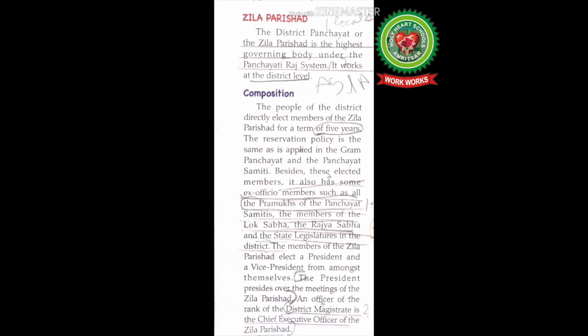Besides elected members, the Jila Parishad also has ex-officio members such as all the Pramukhs of the Panchayat Samithis, members of the Lok Sabha, the Rajya Sabha, and the state legislatures in the district. The members of the Jila Parishad elect a president and a vice president from amongst themselves.